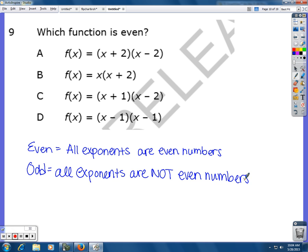If I were to use box or foil to multiply all of these out or distribution, I would end up with x squared minus 4, x squared plus 2, x squared minus x minus 2, and x squared minus 2x plus 1.